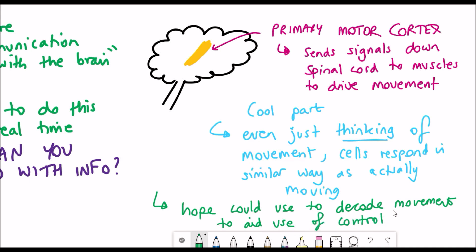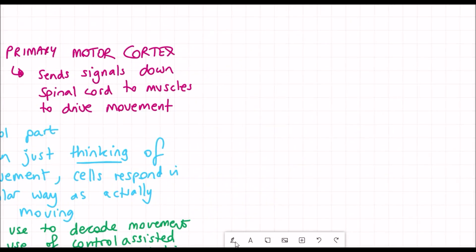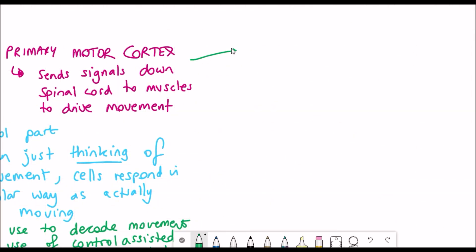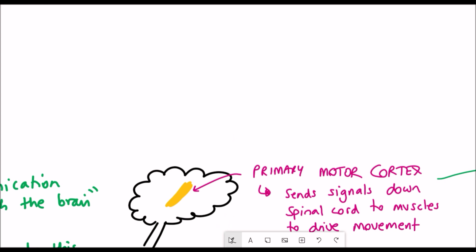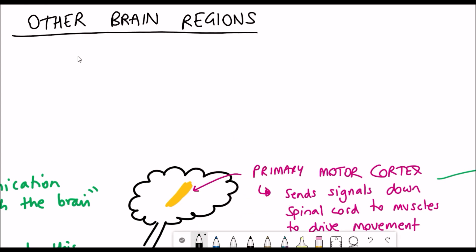This could then be extended further to other regions of the brain because the motor cortex not only does it control arm and hand movements but it can also control speech and so in theory in the future you could have synthetic speech.